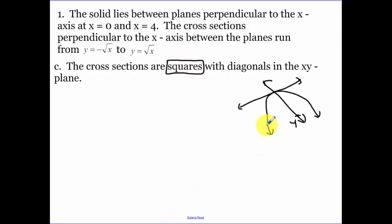Our cross-sections are now squares, but our diagonals are in the xy-plane. I have my diagonal of my square there, and our square's diagonal is along there. Our area as a function of x equals our side squared, but we don't have the side length. We're looking for the side length. I know my diagonal is 2 root x.